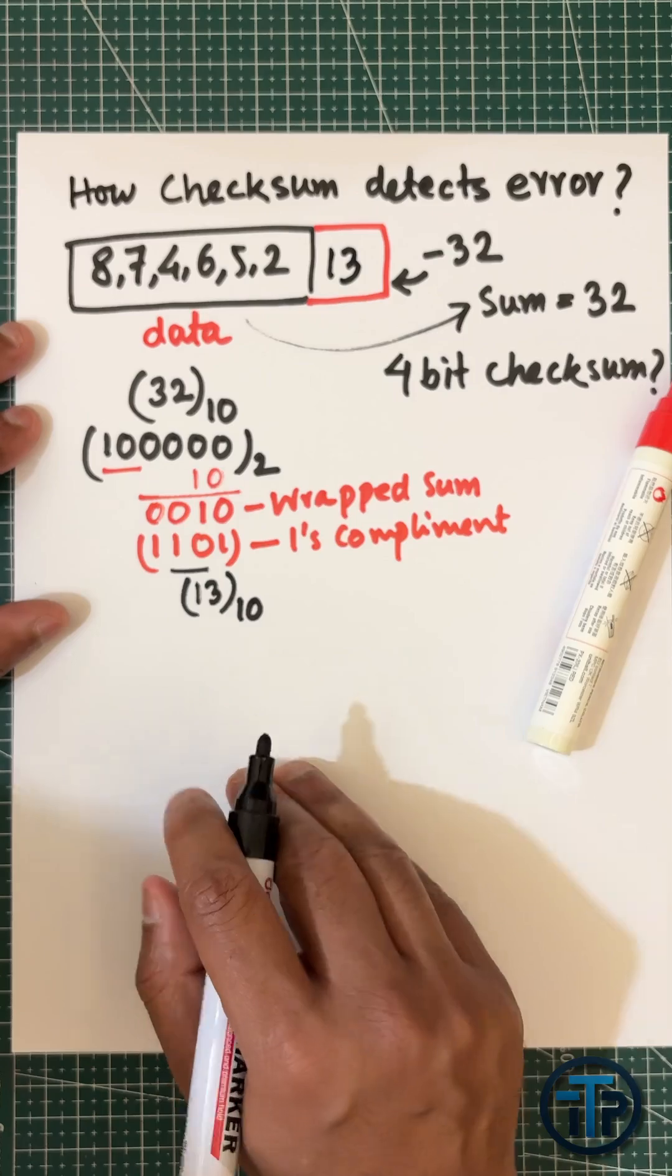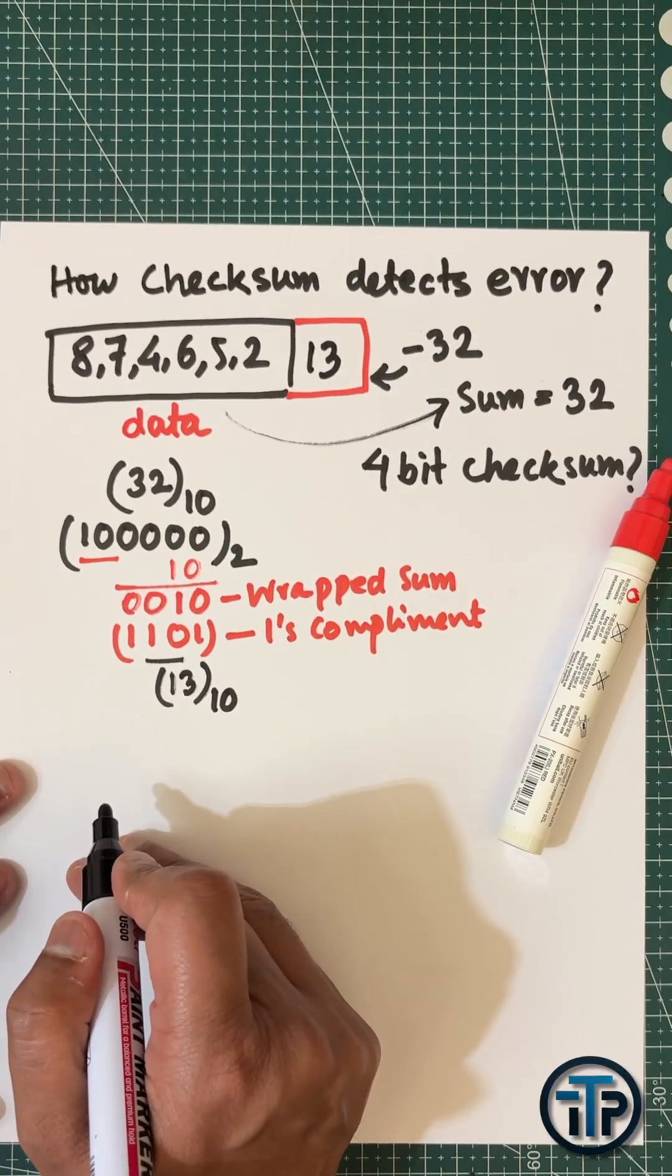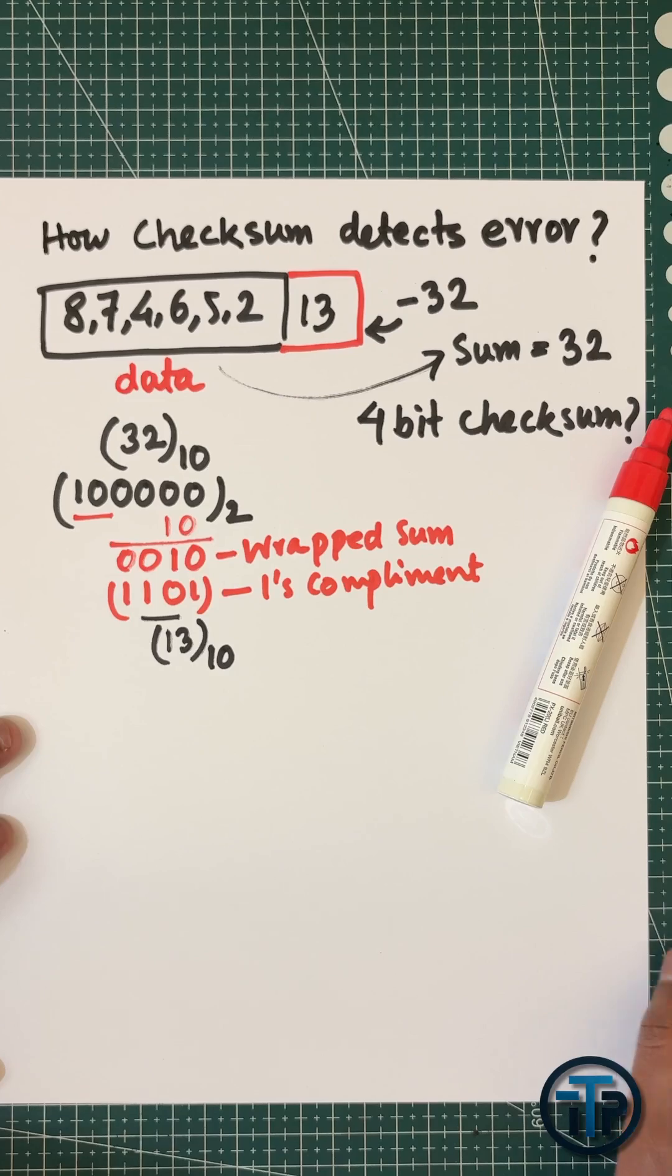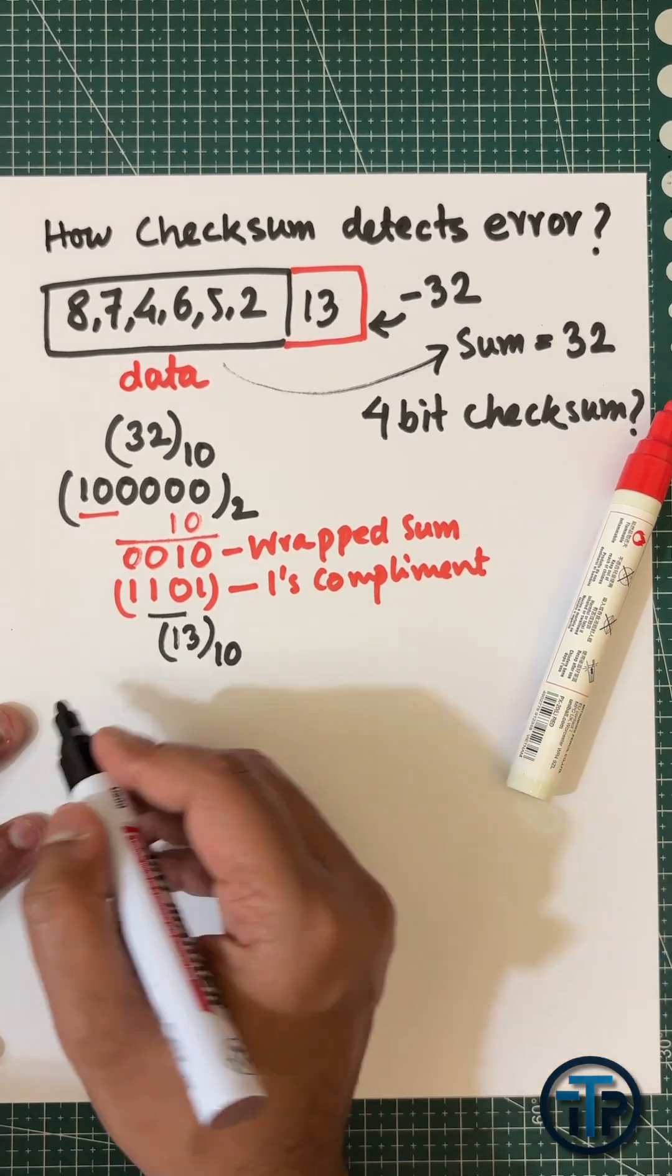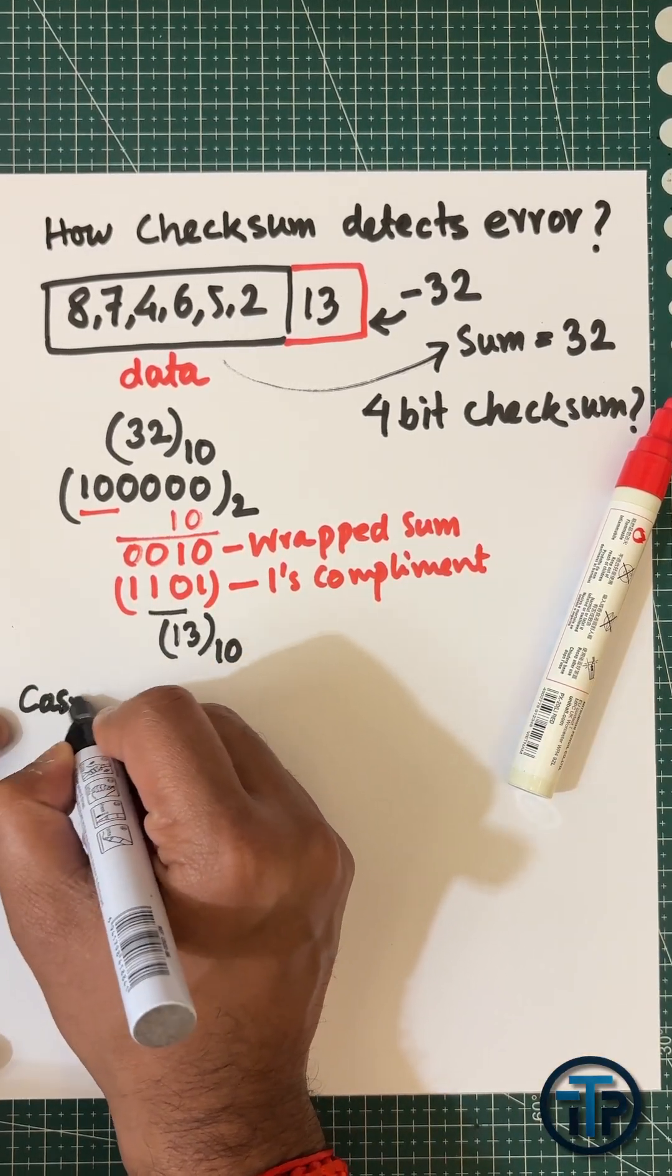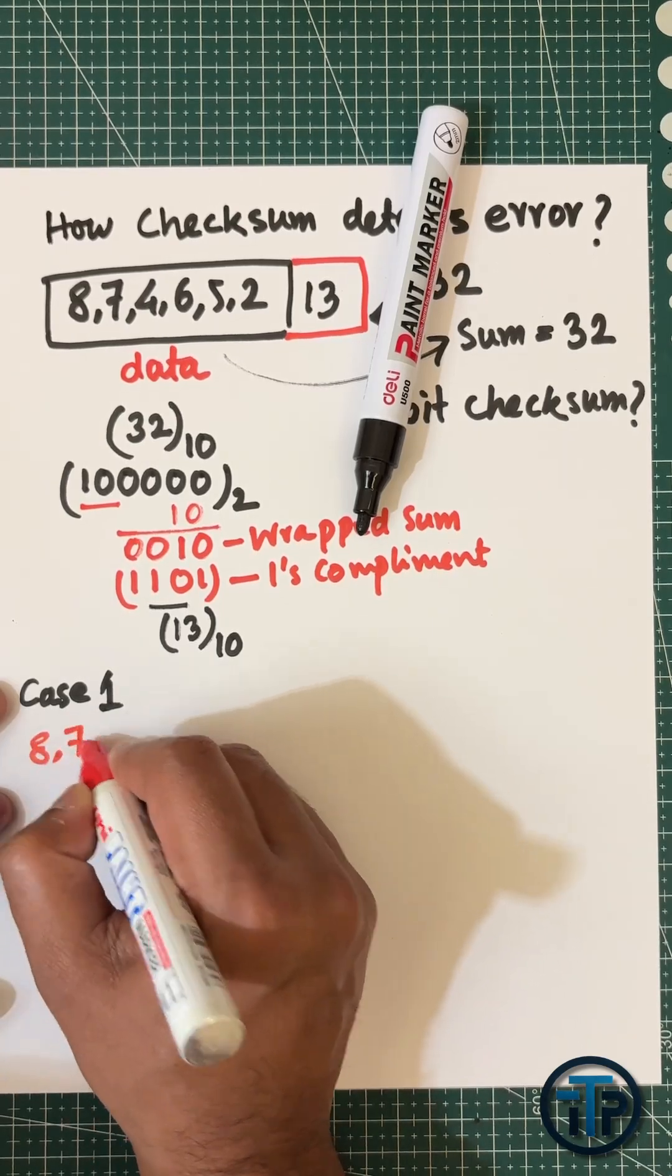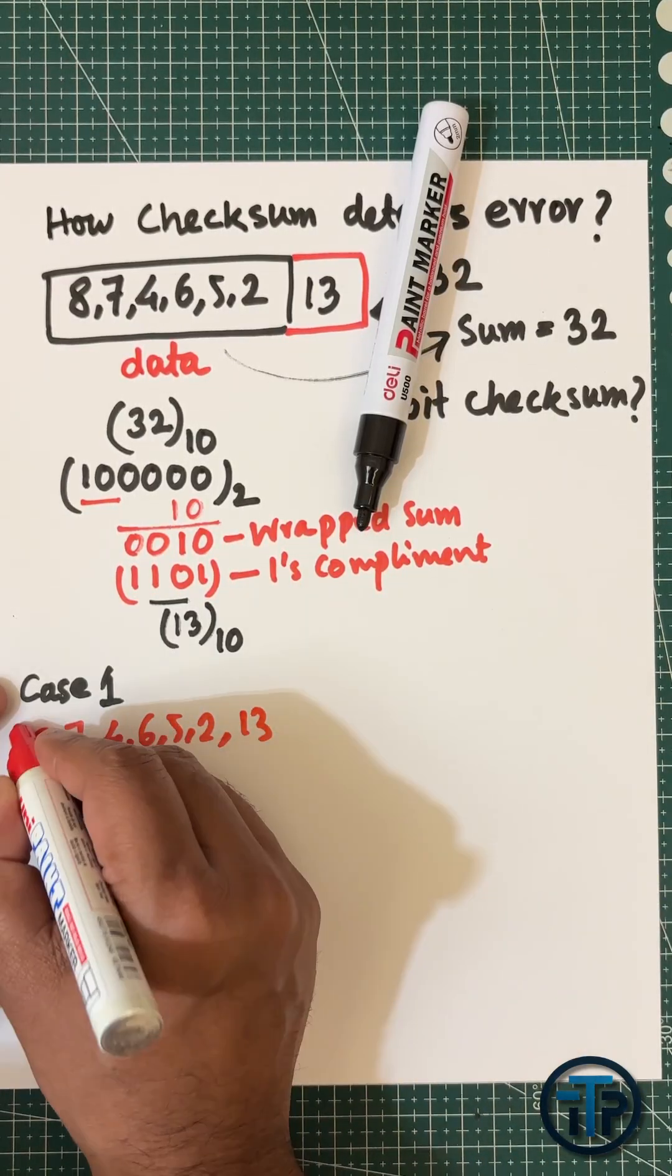Case 1: We'll verify that there's no error and the receiver detects all digits perfectly.